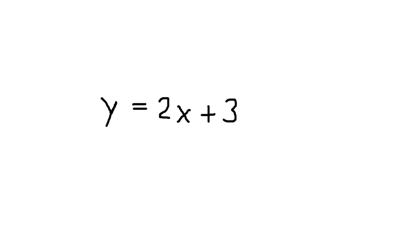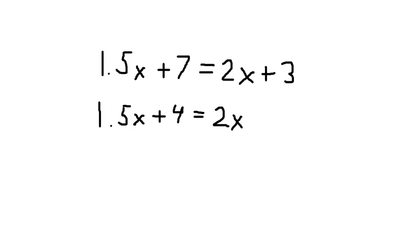So if we wanted to see how many chocolate bars we could buy before the second deal is no longer cheaper, we could set the two equations equal to each other. So we do some quick arithmetic and show that x is equal to 8. So if we bought 8 candy bars, both deals would cost the same amount.